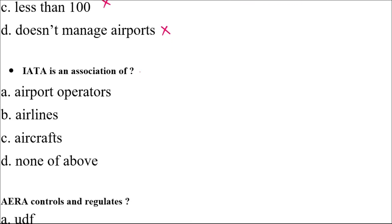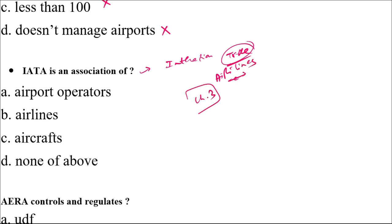Moving to the third question: IATA is an international association and trade organization. If you have read Chapter 3, it is very clearly mentioned that IATA is an association of airlines. Airport operators are not a part of this association. The appropriate answer among all options is airlines.